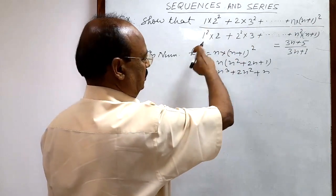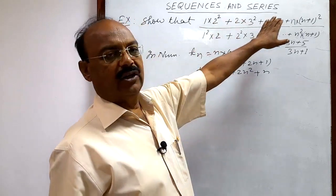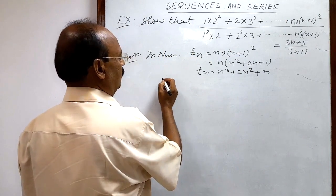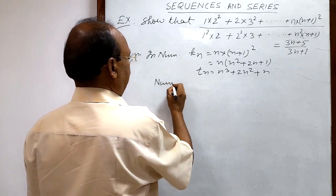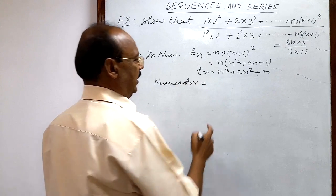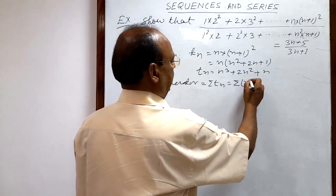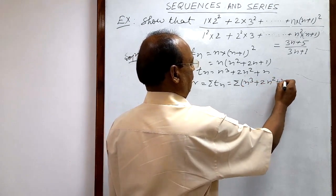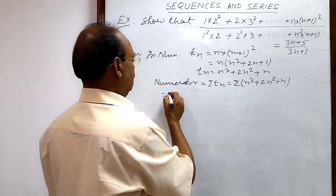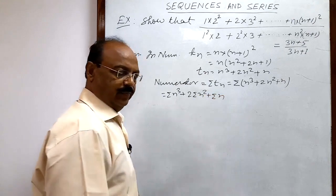The numerator is the sum of n terms, so we need to find the sum. The sum equals Σ Tₙ = Σ(n³ + 2n² + n), and this sigma is distributed over all terms: Σn³ + 2Σn² + Σn.